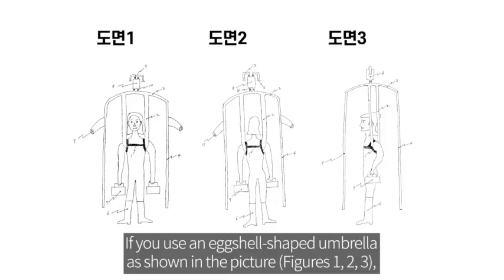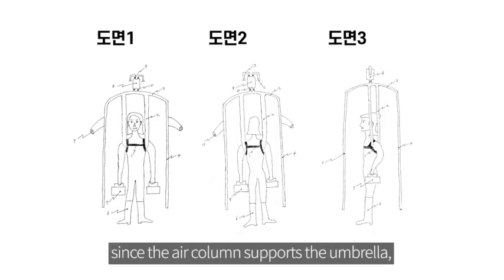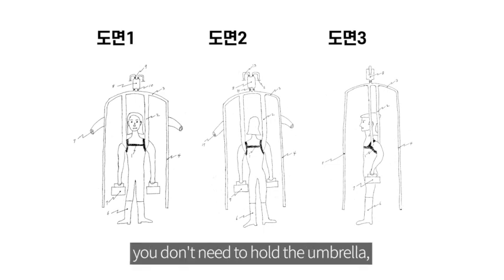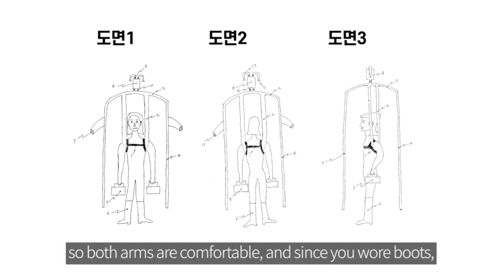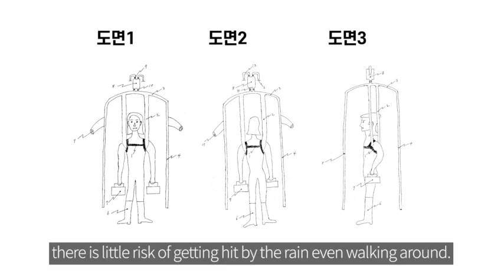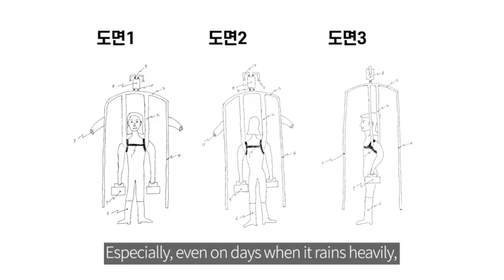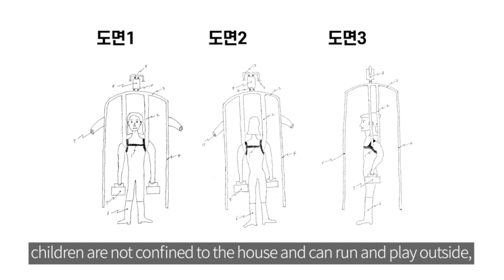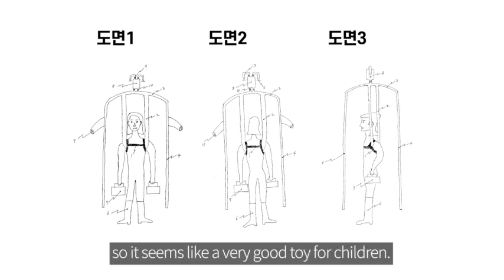If you use an egg-shaped umbrella, as shown in the picture, figures 1, 2, 3, since the air column supports the umbrella, you don't need to hold the umbrella, so both arms are comfortable. And since you wore boots, there is little risk of getting hit by the rain even walking around. Especially, even on days when it rains heavily, children are not confined to the house and can run and play outside, so it seems like a very good toy for children.